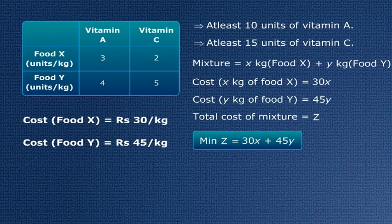Now we also have some conditions. In the mixture, the vitamin A content should be at least 10 units. X kg of food X gives 3X units from food X. And 4 units of vitamin A per kg from food Y gives 4Y units. So this means that the total vitamin A content, 3X plus 4Y, should be greater than or equal to 10.